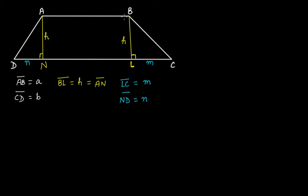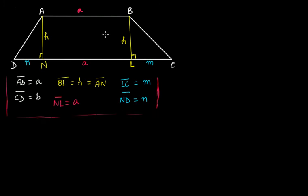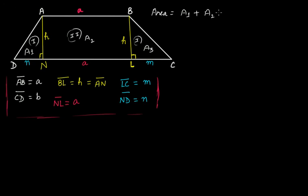Let's take LC = M and ND = M. Since ABLN is a rectangle, NL equals AB, so NL = A. Now the area of the trapezium is: area of triangle AND (A1) + area of rectangle ABNL (A2) + area of triangle BLC (A3), so total = A1 + A2 + A3.